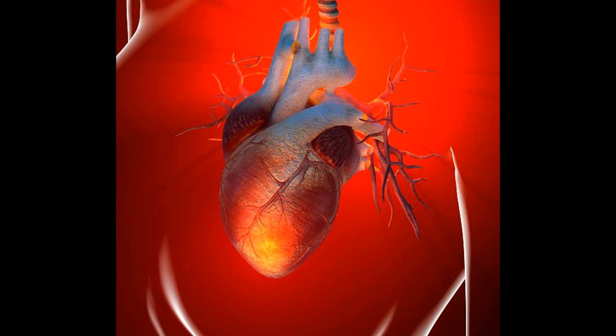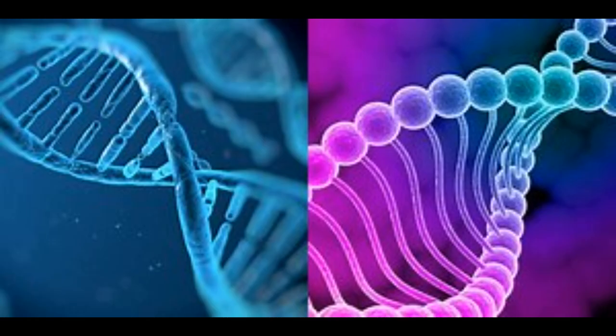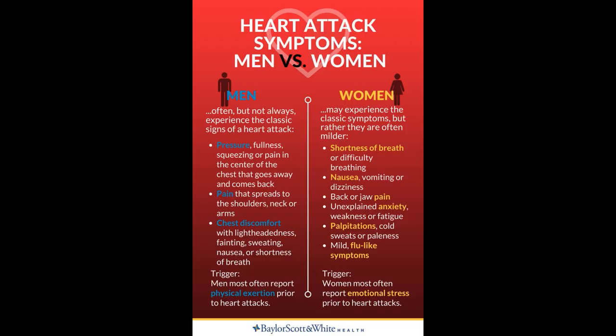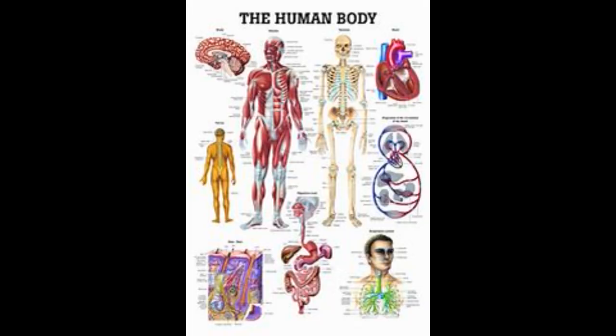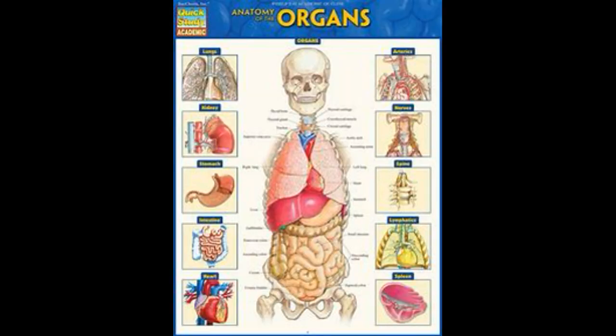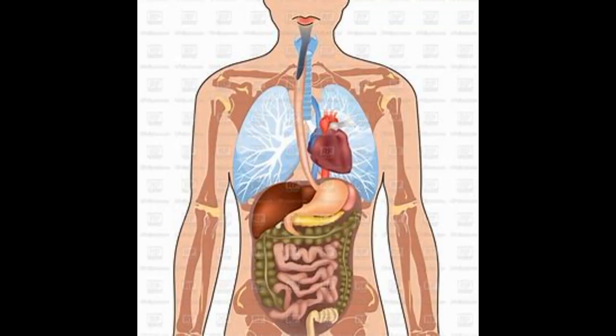The next level of structural organization is the tissue level. Tissues are groups of cells and the material surrounding them that work together to perform a particular function. There are just four basic types of tissues in your body: epithelial tissue, connective tissue, muscle tissue and nervous tissue.